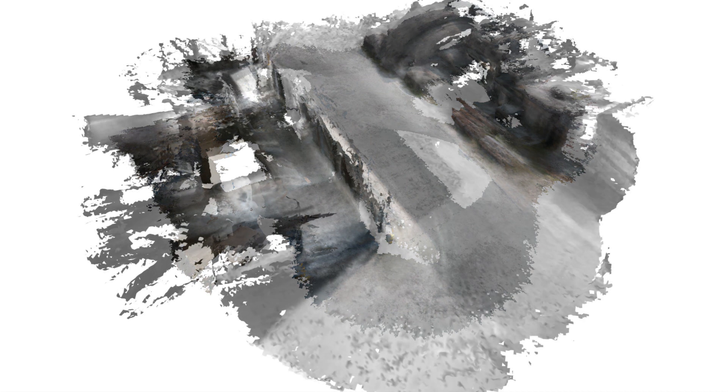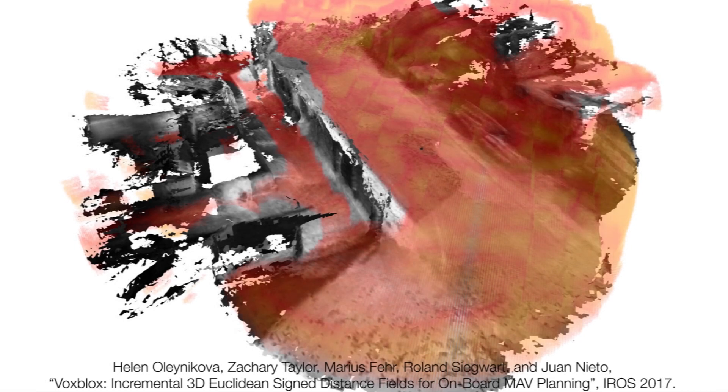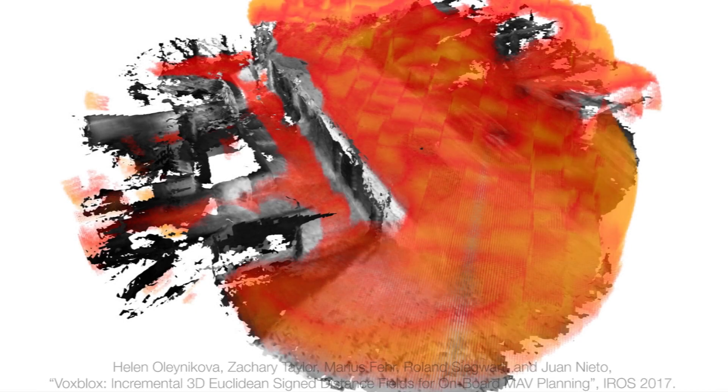For path planning, we build a second map using the stereo camera pair, which has a much larger field of view. From this map, we calculate traversability information. Marked in red are all the points where the robot has enough space to pass.